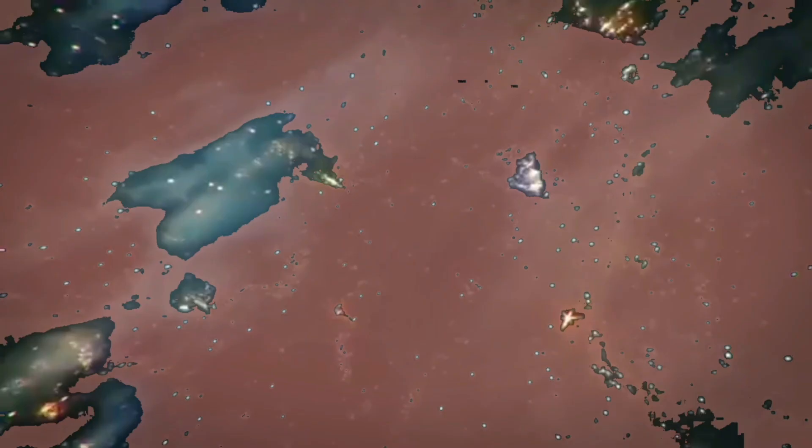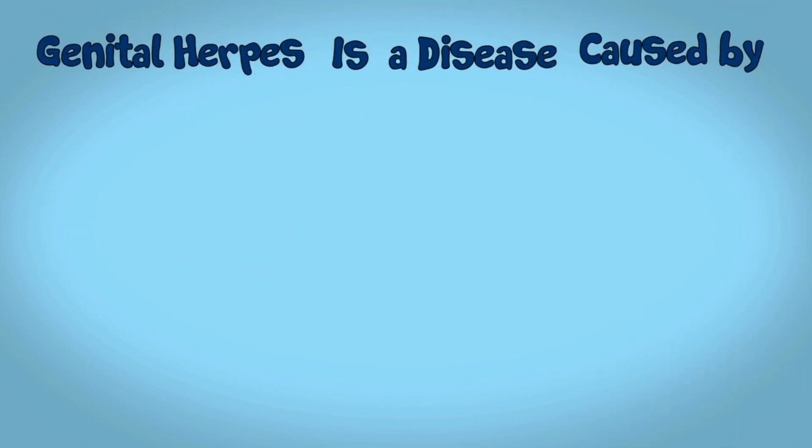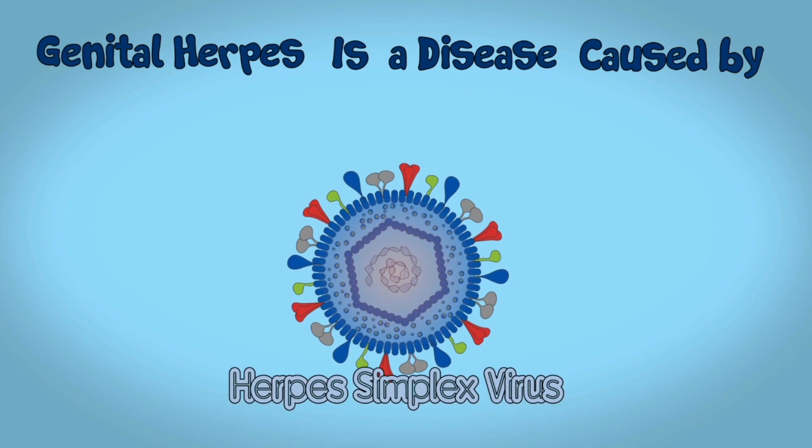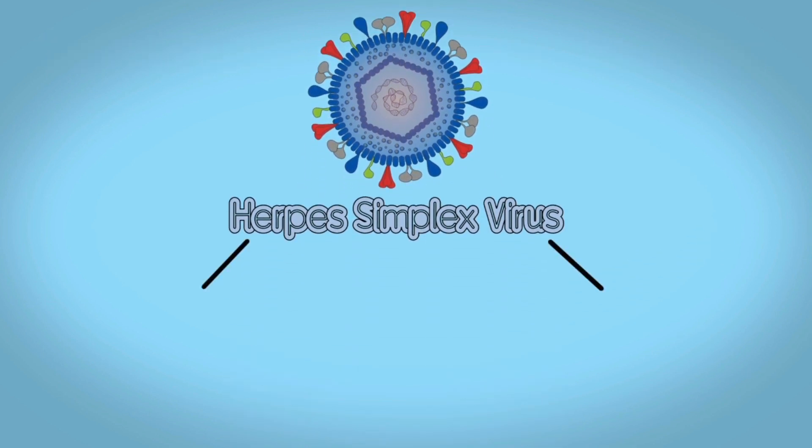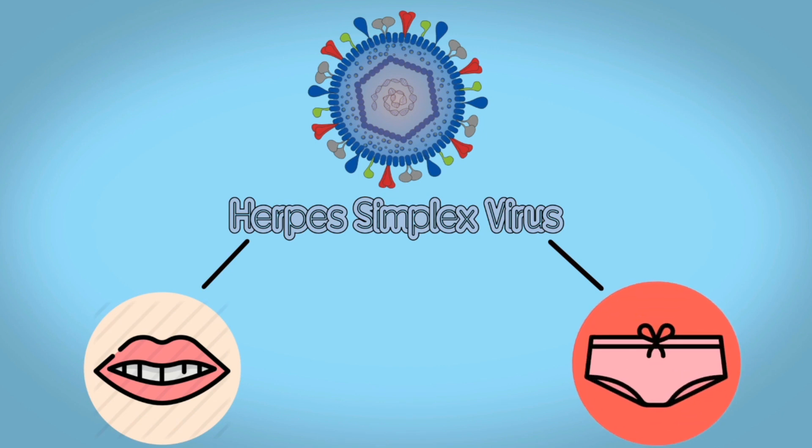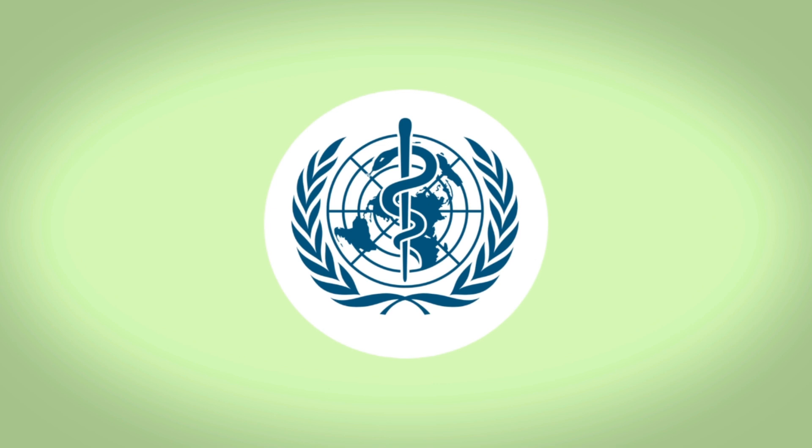Our last destination will be Utopia. First of all, what is genital herpes? Genital herpes is a disease caused by the herpes simplex virus, of which there are two types. Type 1 usually causes oral herpes, but still in most cases, genital herpes is caused by the second type of herpes simplex virus.